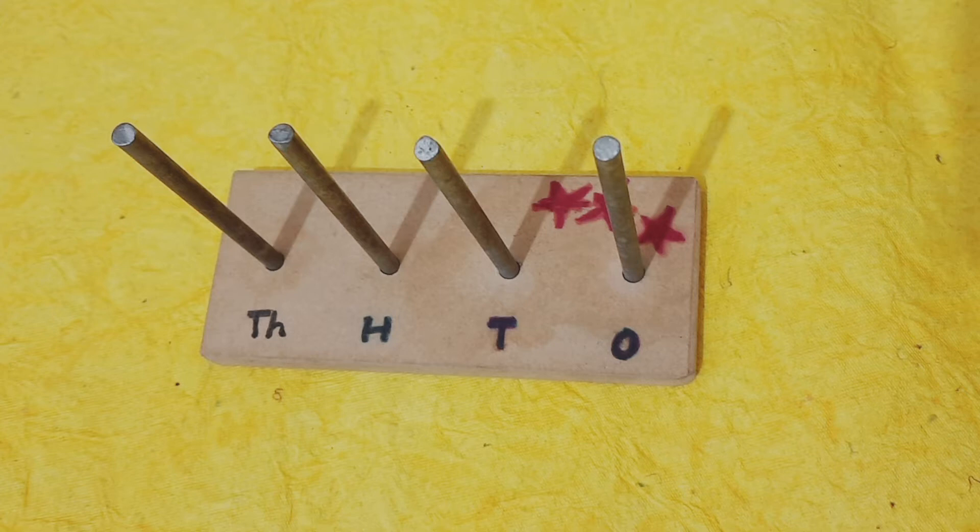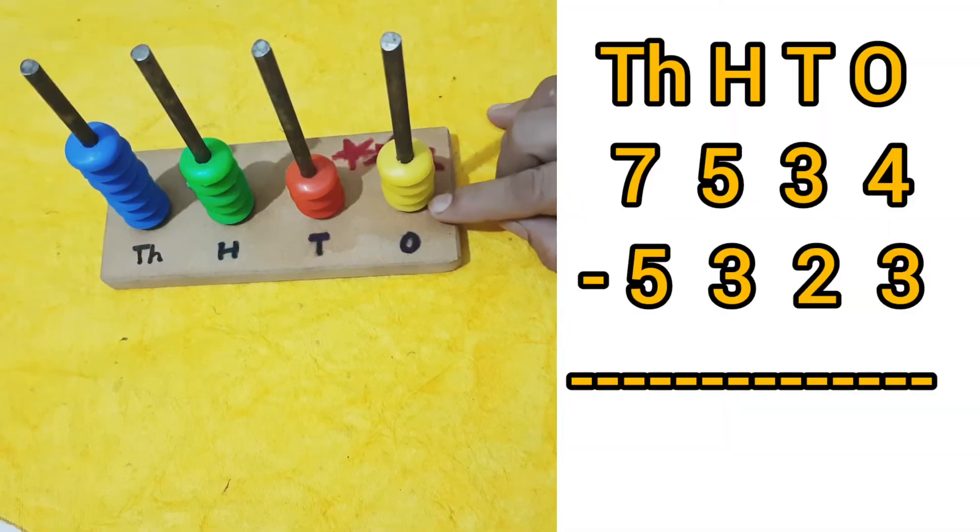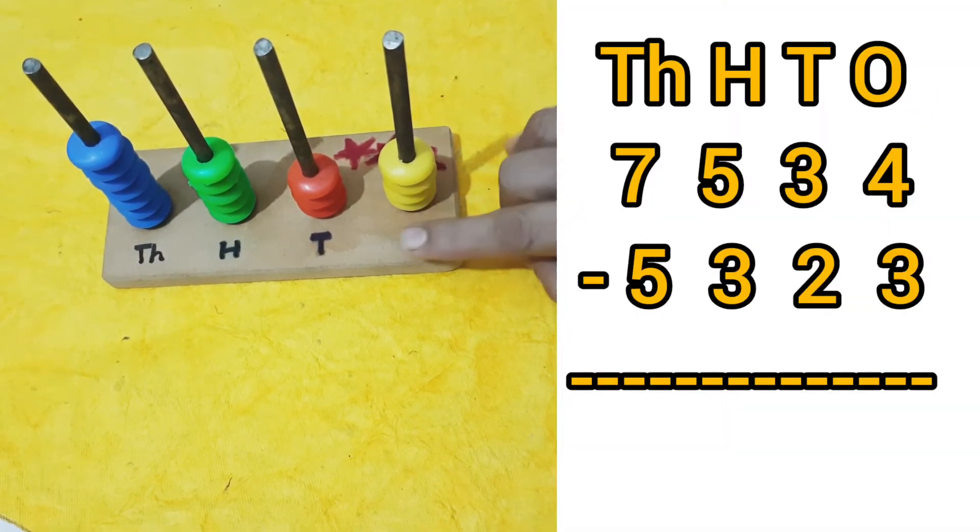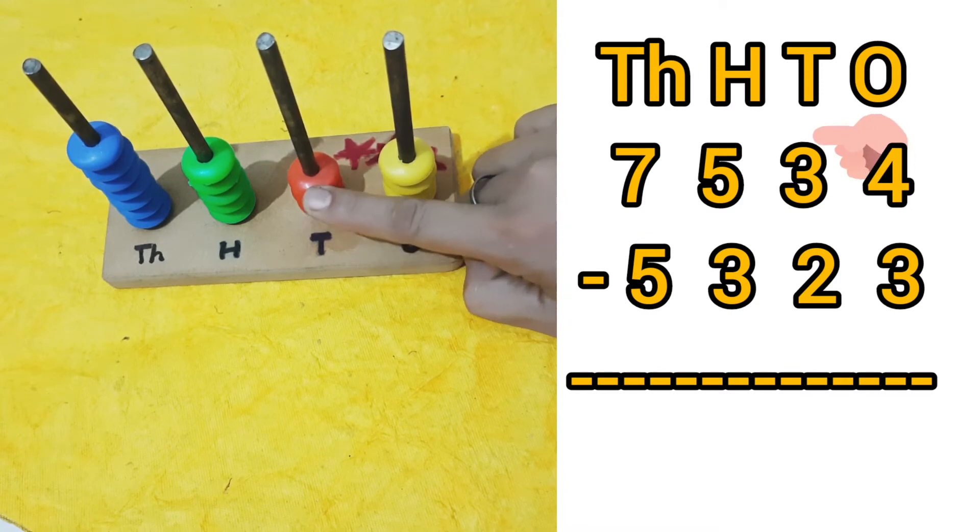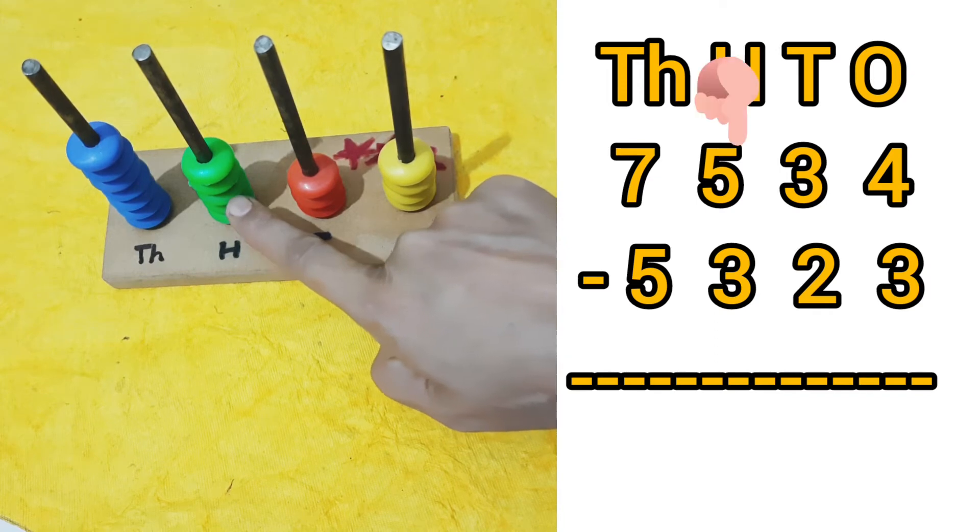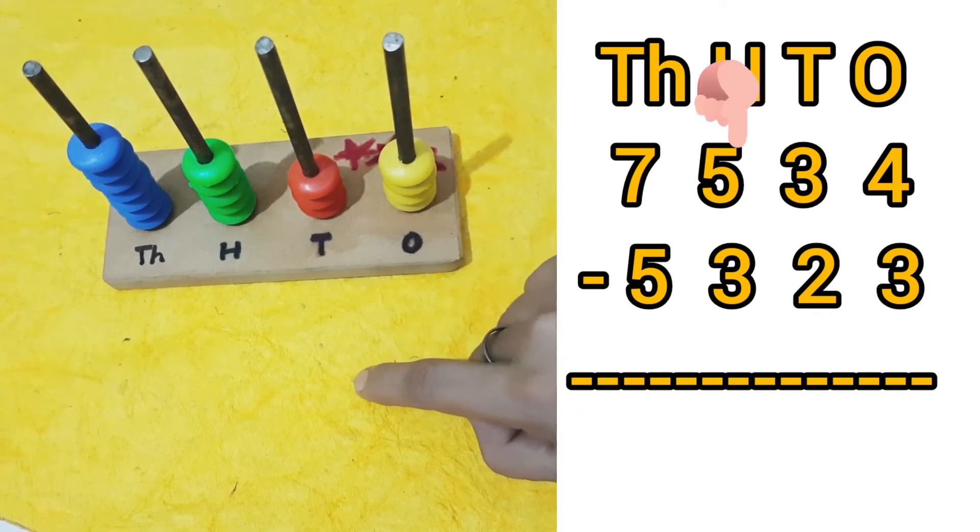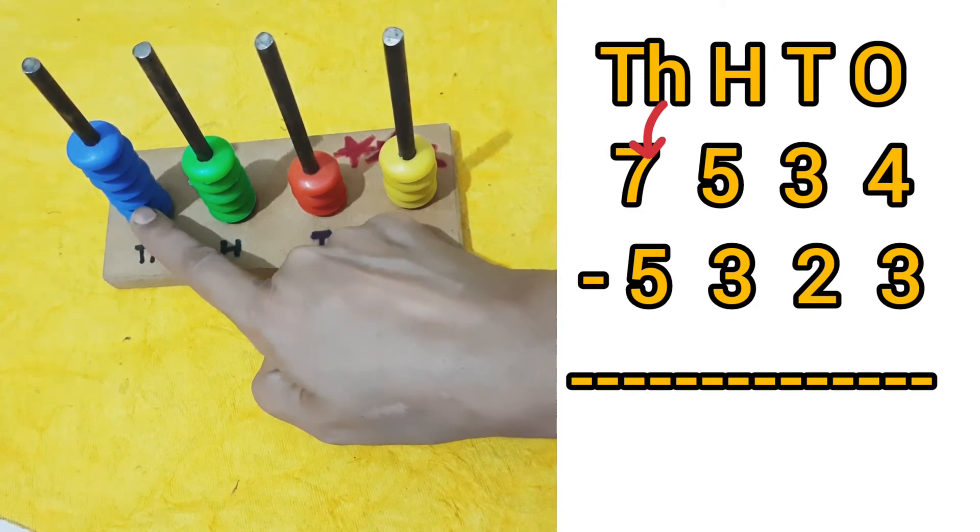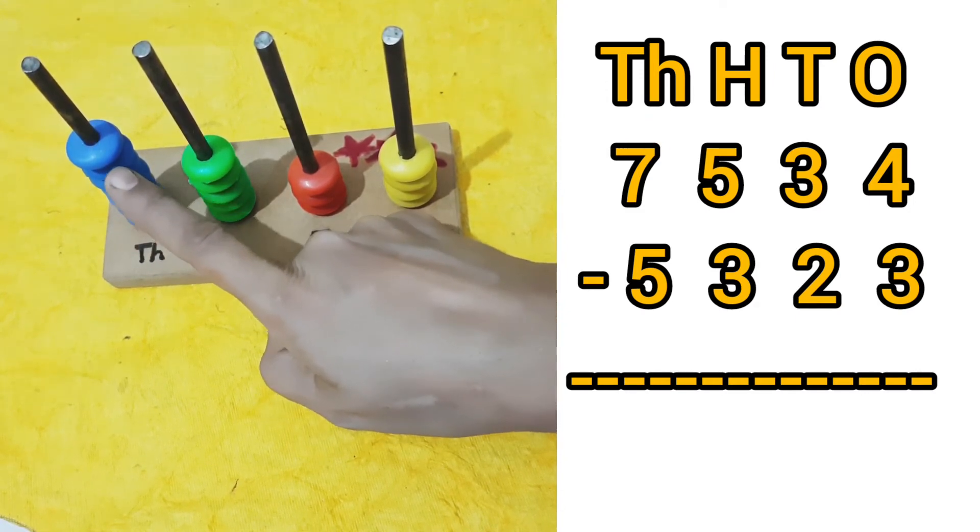Ones, tens, hundreds, and thousands. In 7534, four is at the ones place - I am using yellow color beads for that. Three is at the tens place - I am using three red color beads for that. At the hundreds place, five is there, so I am using five green color beads for that, and seven blue color beads for the thousands place.